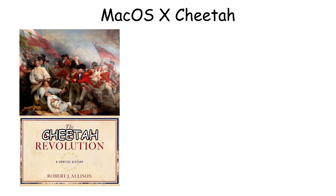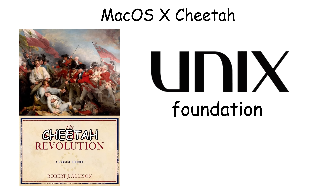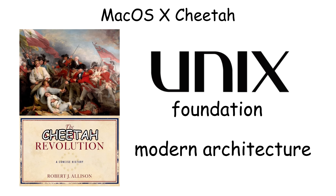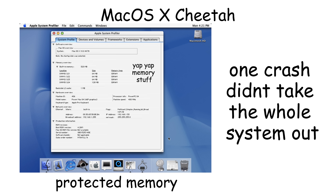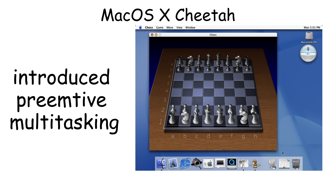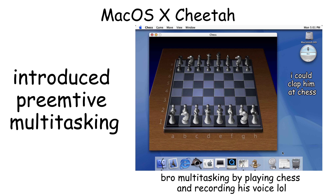What made Cheetah revolutionary was its Unix foundation and modern architecture. It provided protected memory, meaning one application crash wouldn't take down the entire system. Cheetah also introduced pre-emptive multitasking, allowing better processor management between applications.